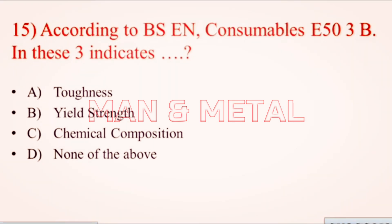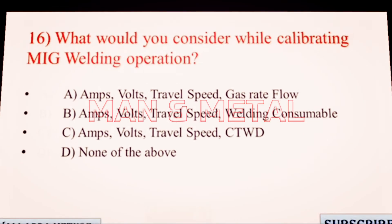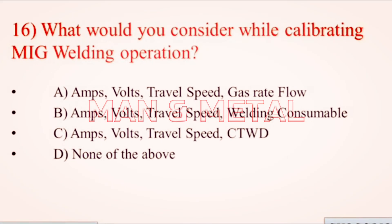Question 15: According to BS EN consumable classification Z53B, the 'three' indicates: a) toughness, b) yield strength, c) chemical composition, d) none of the above.